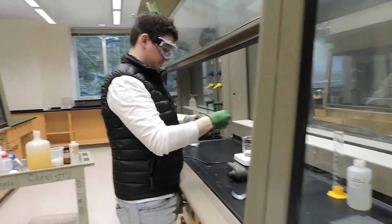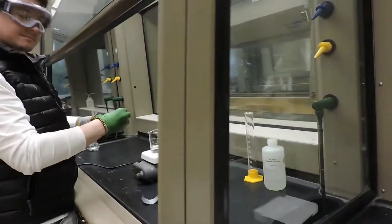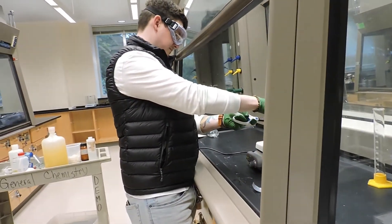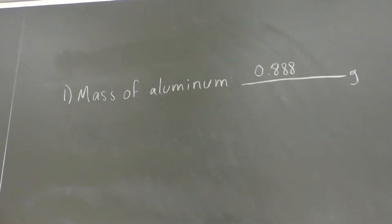Today we're going to do the preparation of alum with Jared. So first he has weighed out some aluminum and that mass is 0.888 grams.